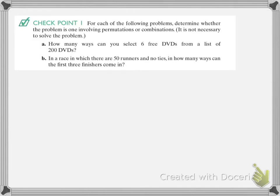For each of the following problems, determine whether the problem involves permutations or combinations. It's not necessary to solve the problem. First: how many ways can you select six DVDs from a list of 200 DVDs? Here we're just arbitrarily picking six DVDs out of a list of 200 — we don't care about order. There's no first, second, or third place, so for A, that's going to be a combination.